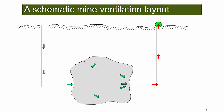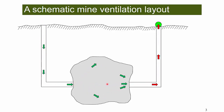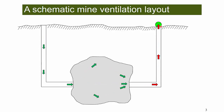This is a schematic mine ventilation layout. We can see that fresh air enters the mine from the left side — we call this the intake shaft. The fresh air then travels to the working face underground, and the contaminants in the air are exhausted to the surface by an exhaust fan.